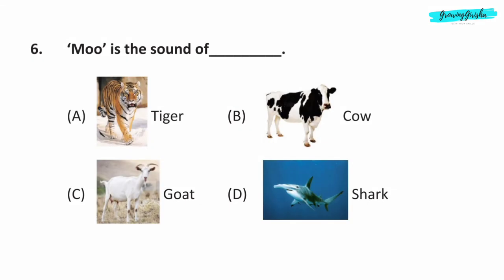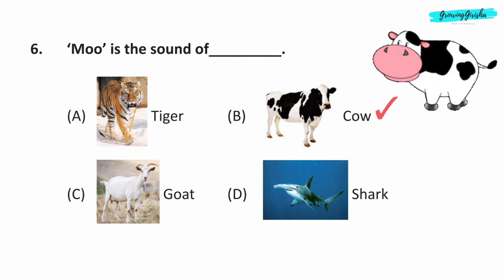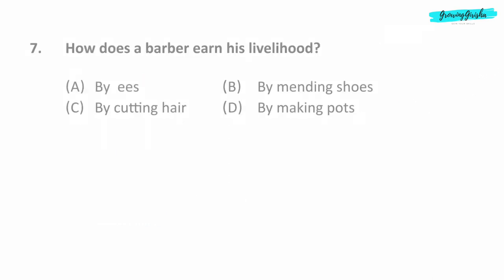Question 6. Moo is the sound of — Option B: Cow.